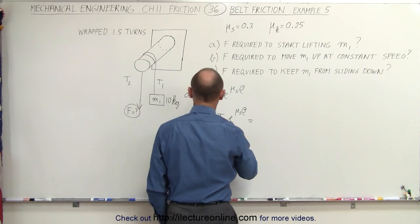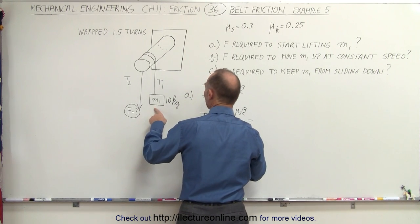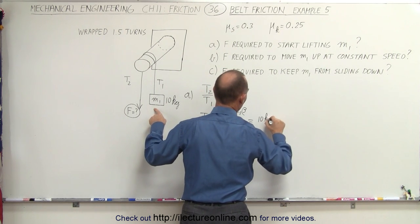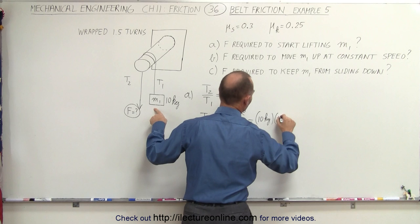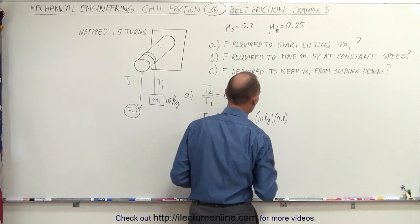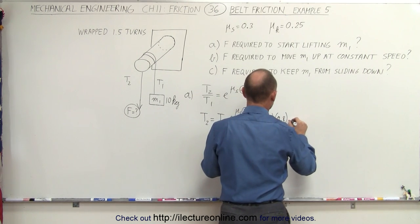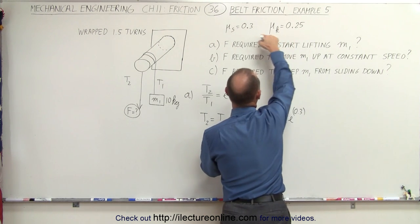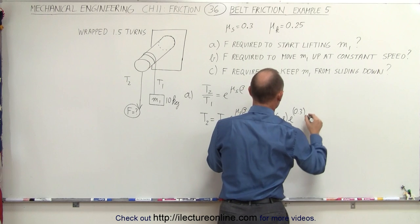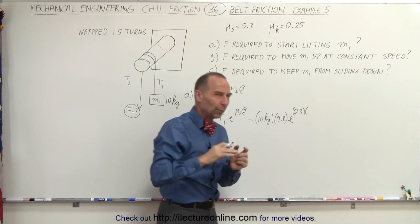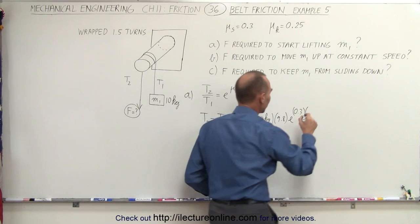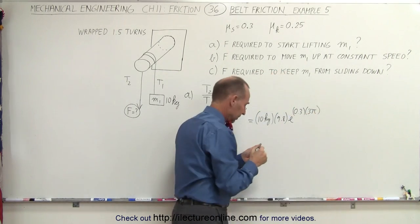And so this will be equal to T1 is going to be the weight of M1, would be 10 kilograms times the acceleration due to gravity, 9.8 meters per second squared. And we multiply that times e to the 0.3, because we're going to use coefficient of static friction, times the angle, well, one and a half times around the peg. That would be 3 pi radians.